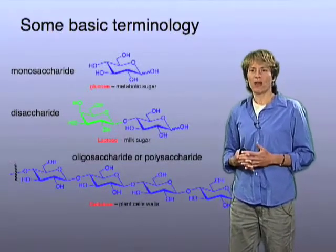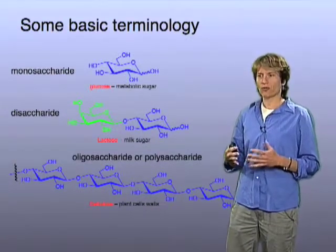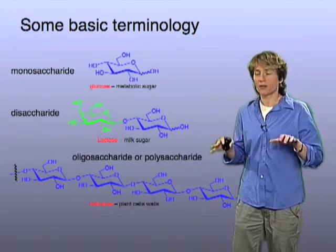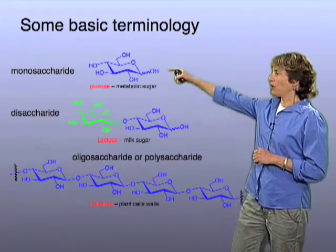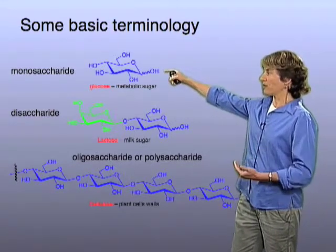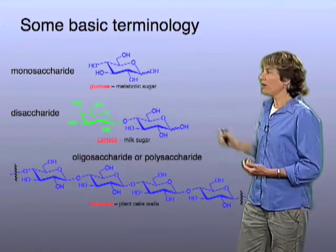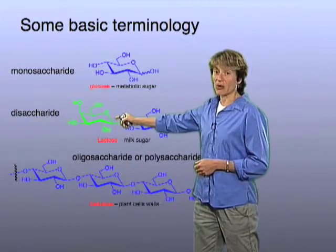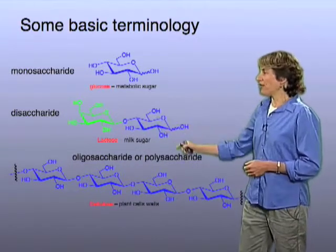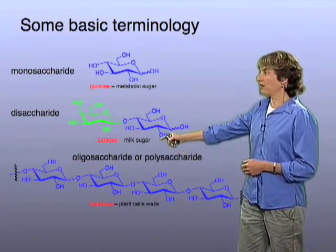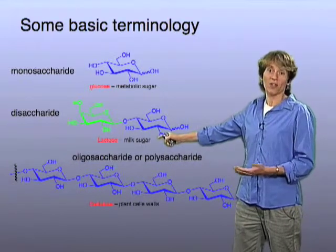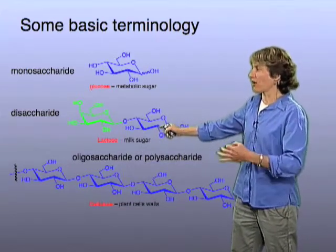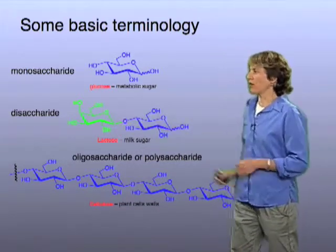We have terminology to describe the structures of higher-order glycans — structures made of multiple monosaccharide building blocks. For example, glucose is simply a monosaccharide, and we often think of this as a metabolic sugar. But if you take glucose and link another sugar to it — galactose — these two together make a disaccharide known as lactose, which is abundant in milk. It's called a disaccharide because it has two monosaccharide units.